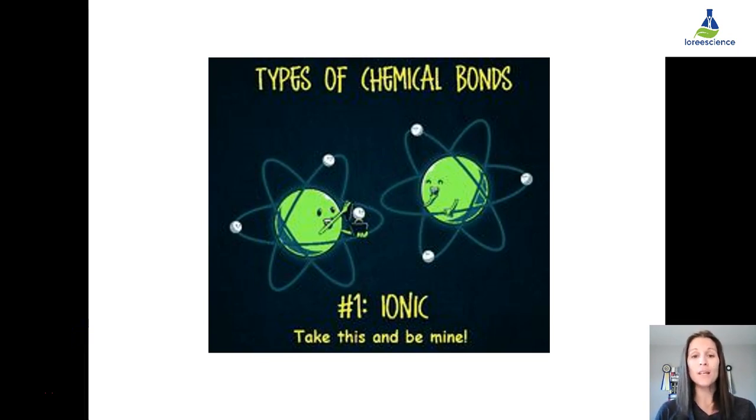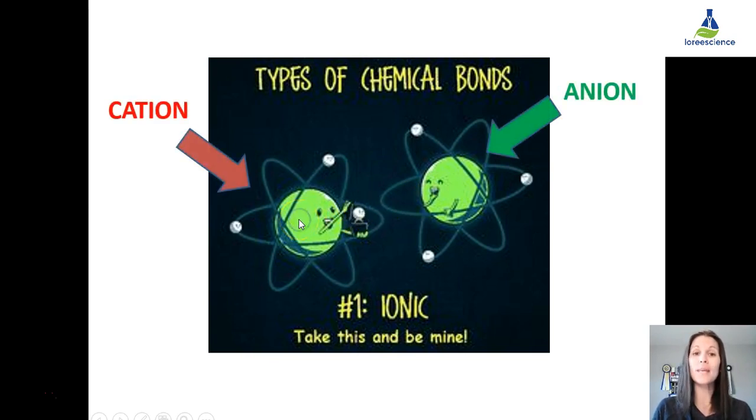Take a look at this cartoon. We have this little atom here that's offering his electron. When he loses the electron, he's going to become positively charged, which would make him the cation, and this one gaining the extra electron would become the anion.